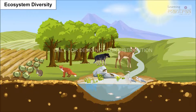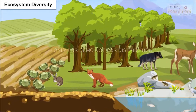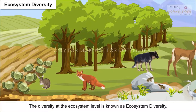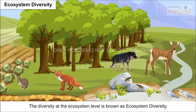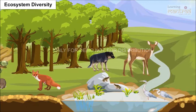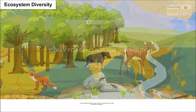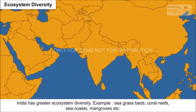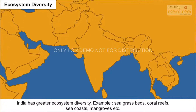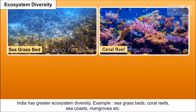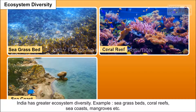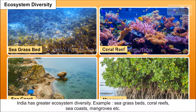Ecosystem diversity. The diversity at the ecosystem level is known as ecosystem diversity. India has greater ecosystem diversity. Examples include sea grass beds, coral reefs, sea coasts, mangroves, etc.